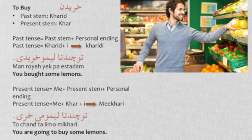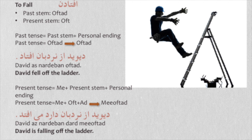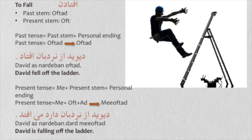The fifth verb is oftadan — to fall. The past stem is 'oftad' and the present stem is 'oft'. For the past tense, for the third person, no personal ending is needed: 'oftad' means he or she fell. David az narteban oftad — David fell off the ladder. For the present tense, we need 'me' plus present stem 'oft' plus 'ad': mi oftad. David az narteban mi oftad — David is falling off the ladder.